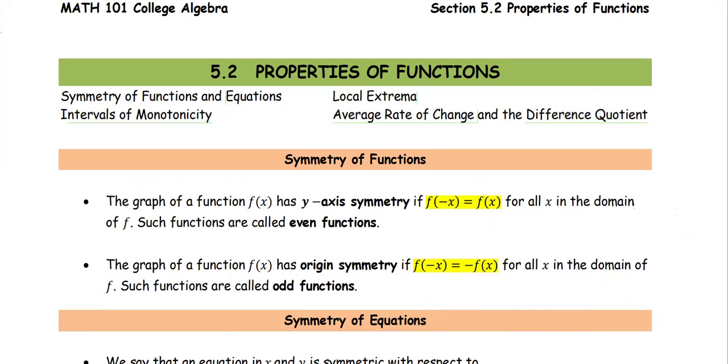In section 5.2, properties of functions, we are going to look at the symmetry of functions and equations, local extrema means local min, intervals of monotonicity, and also the average rate of change and the difference quotient.